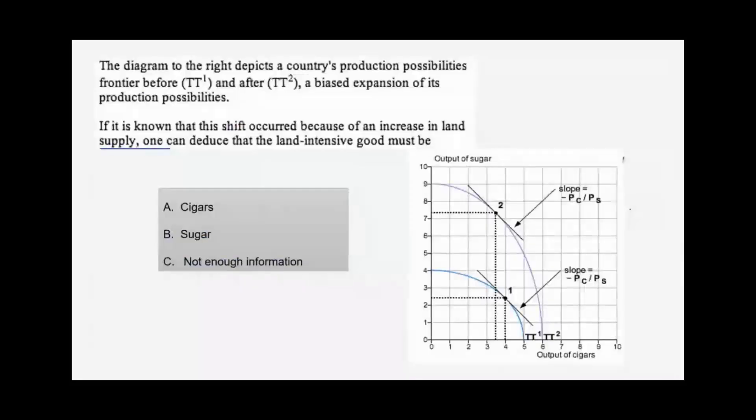Second question. There is increase in land. So the production possibility frontier is moving outwards, increase in land. Sugar is land intensive. And cigars are whatever the other factor of production is intensive. So in this case, the answer is B.